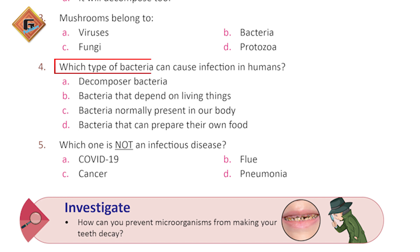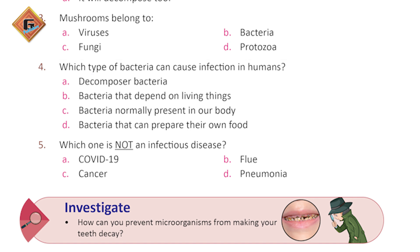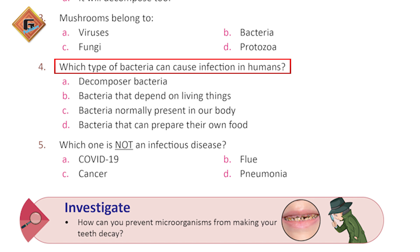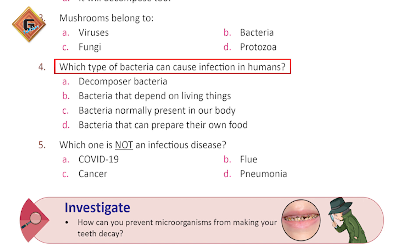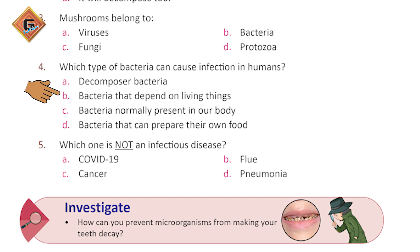Which type of bacteria can cause infection in humans? Do you remember which bacteria can cause infection? Those bacteria that are dependent on living things — that is, those bacteria that live on living hosts and destroy them. So here B is the correct option: bacteria that depend on living things.